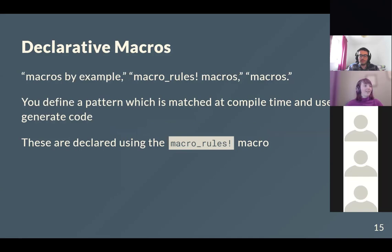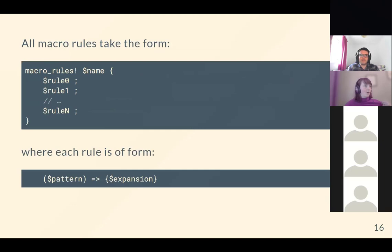Whenever you see macro_rules, that means someone is defining a declarative macro. They all take the form: macro_rules! followed by the macro name (without an exclamation mark), then a series of rules separated by semicolons. Each rule takes the form of open brackets, a pattern to match, close brackets, then an arrow, then the expansion we want.